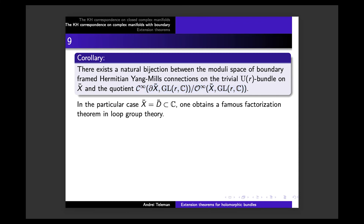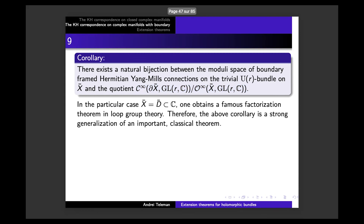In the particular case that appears in loop group theory, one obtains as a consequence — essentially a two-line consequence — a famous factorization theorem known in loop group theory. Therefore the above corollary is a strong generalization of an important classical theorem. Going from the disk in C to an arbitrary pseudo-convex domain in Cⁿ is really a strong generalization.